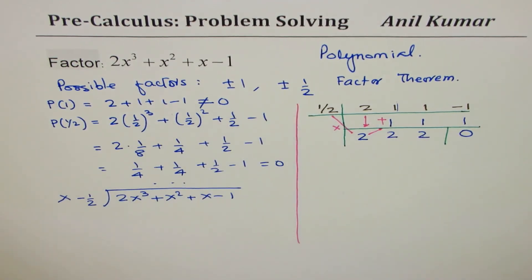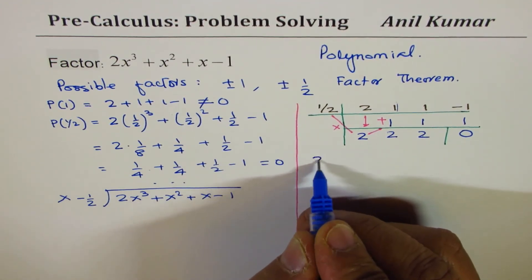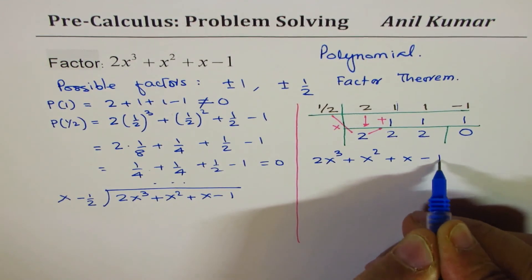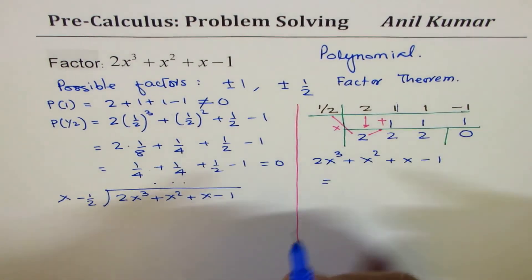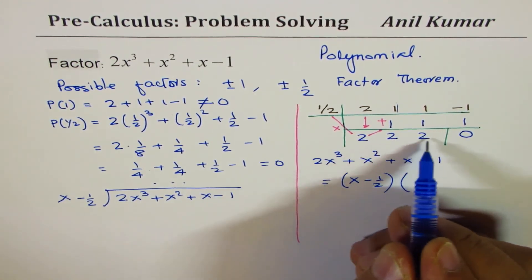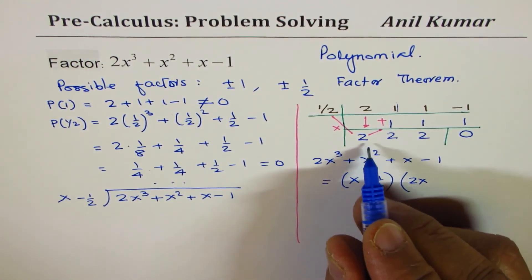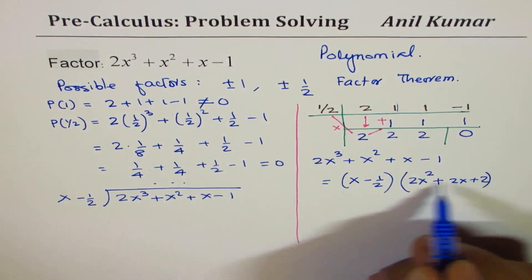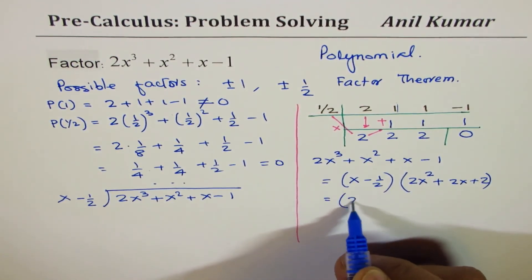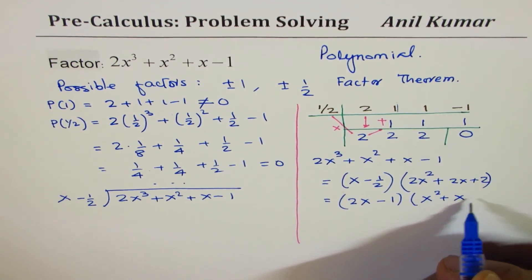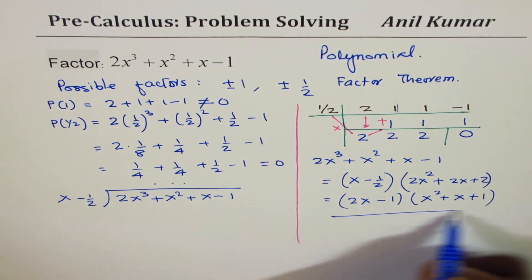0 is your remainder. It has to be since it is a factor. So I could write 2x³ + x² + x - 1 as equal to - one of the factors is 1/2 - (x - 1/2) times what? This is 2x². These are coefficients. 2x² + 2x + 2. We can take 2 common. So if you take 2 common, you get 2(x - 1/2)(x² + x + 1). So that becomes your answer.